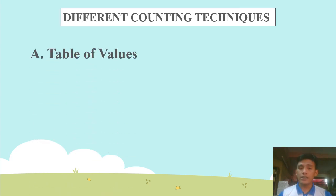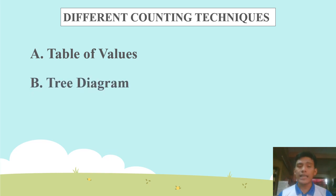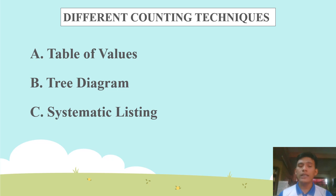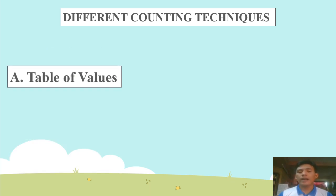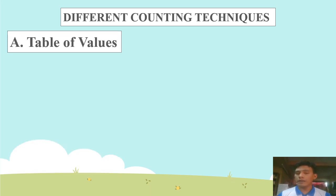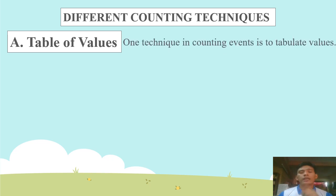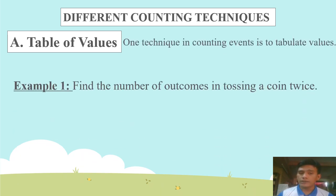There are different counting techniques. First, that will be the table of values. Second, the tree diagram. Third, that will be systematic listing. We'll tackle first the table of values. One technique in counting events is to tabulate values.